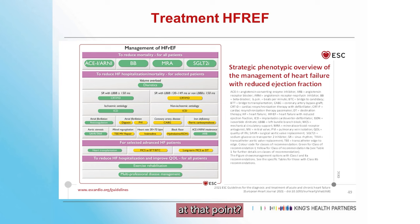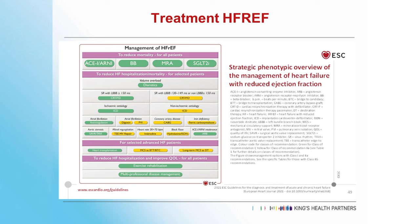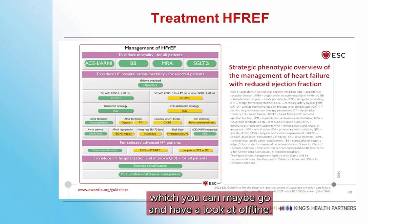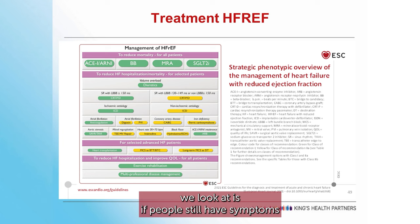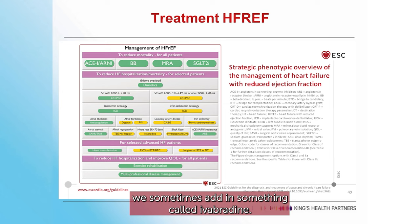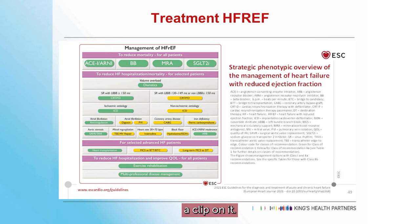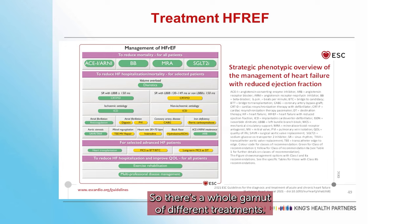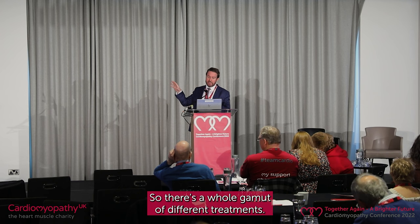There are other management options if people still have symptoms and a reduced ejection fraction. If your heart rate is quick, we sometimes add ivabradine. If you're Afro-Caribbean, we add hydralazine and nitrates. If you've got a leaky valve, we sometimes put a clip on it. If you've got significant coronary artery disease and chest pain, we can put stents in. So there's a whole gamut of different treatments.